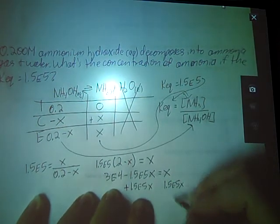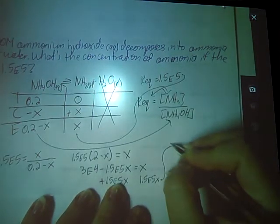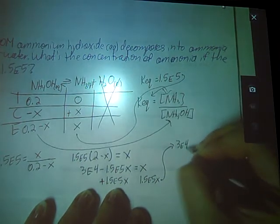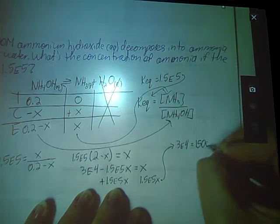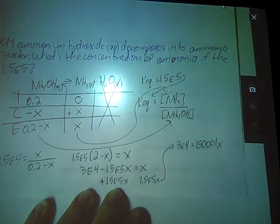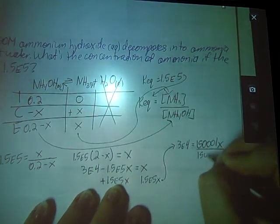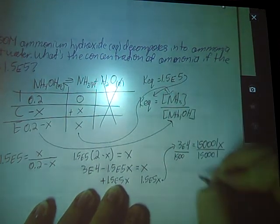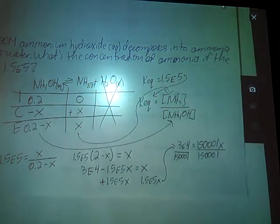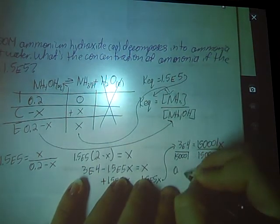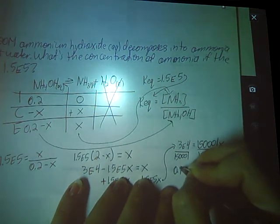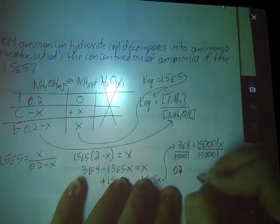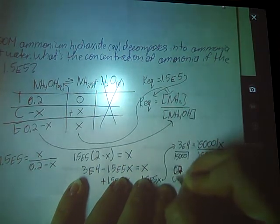So that's 1x plus 1.5 times 10 to the 5th x. So, sorry, I ran out of space at the bottom of my paper here. So, up to here gives me 3 times 10 to the 4th equals, okay, divide both sides. So, 3 times 10 to the 4th divided by that number gives me 0.1 and a whole bunch of 9, so we're just going to do 0.2.